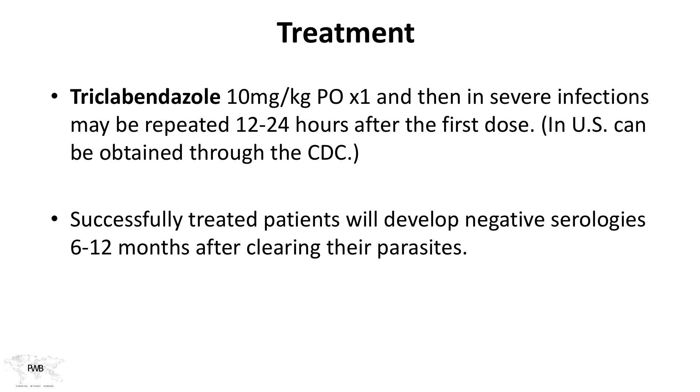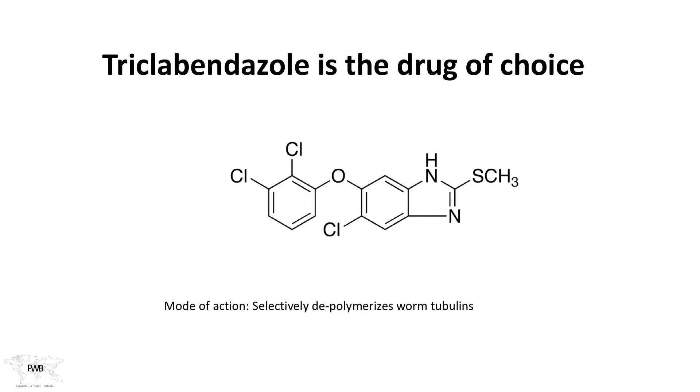Treatment — and this is a pearl — fascioliasis is not treated with the drug you normally think about for parasitic infections. Triclabendazole is given, usually once, but in severe infections it may be repeated 12 or 24 hours later. You need to work through the CDC in the United States to get access to this drug. Do not use albendazole or praziquantel — triclabendazole is the drug of choice, and it works by selectively depolymerizing the worm's tubulin.